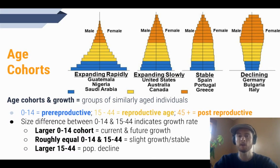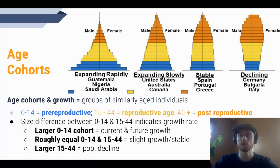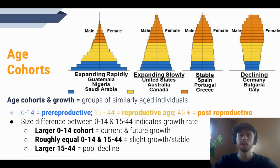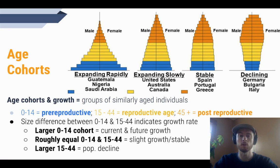In demography — the study of human populations — we break populations into three large age cohorts: the 0 to 14 age cohort, which we call pre-reproductive; the 15 to 44 year old age cohort, which is the reproductive age; and then 45 plus, which we call post-reproductive. We're going to represent these in the diagram with blue, yellow, and orange.